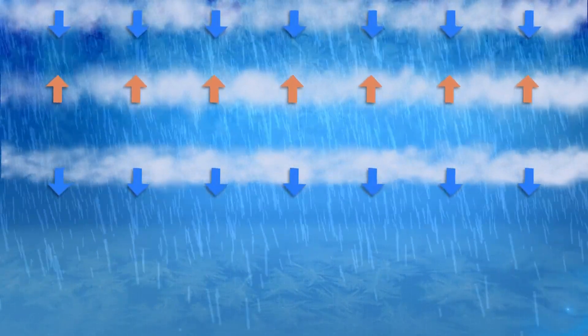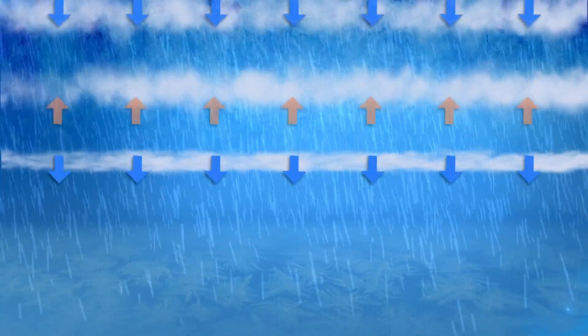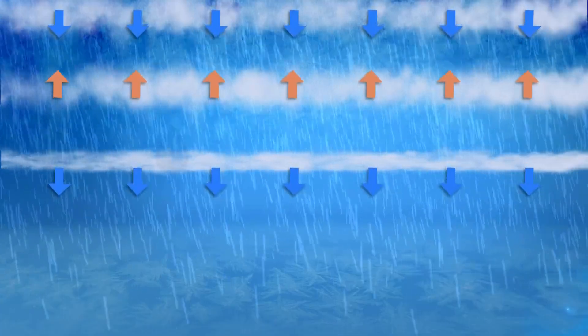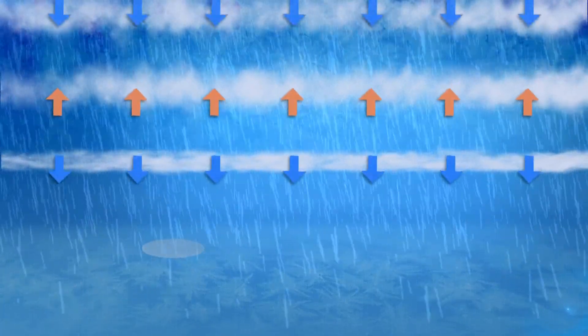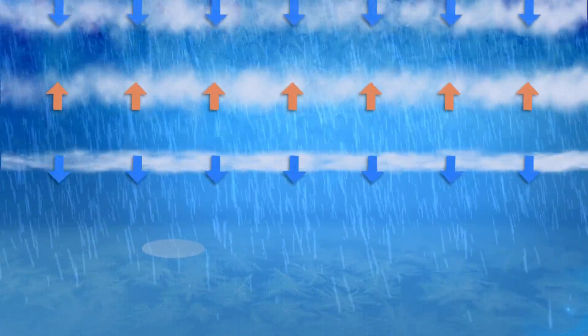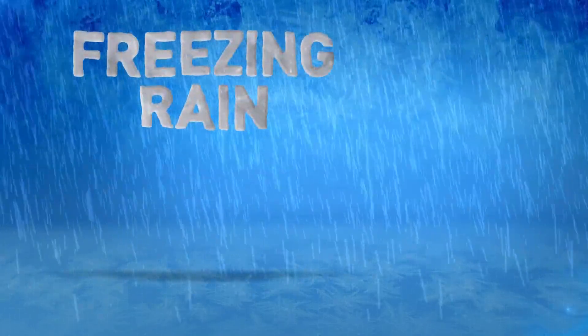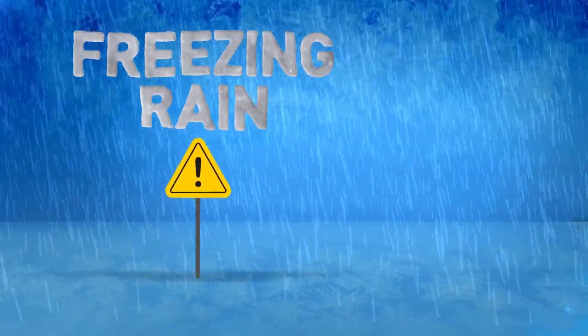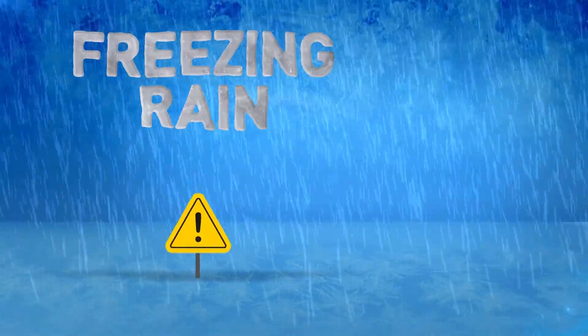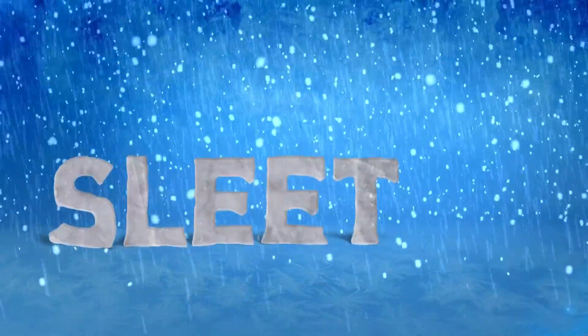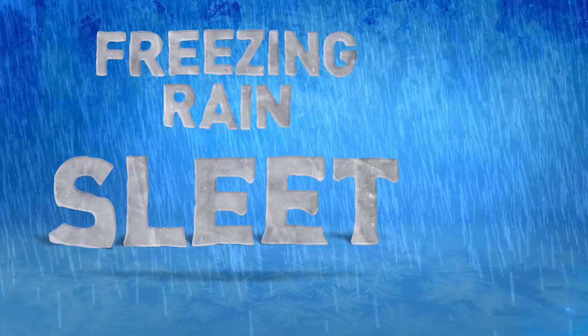If the layer of below freezing air is very shallow, the raindrop will not freeze until it lands on a frozen object such as the ground, your car, or sidewalk, and we call that freezing rain. Both are very dangerous, can lead to power outages, and more importantly perhaps for many, often lead to complete ice coverage of area roadways and sidewalks, making travel nearly impossible.